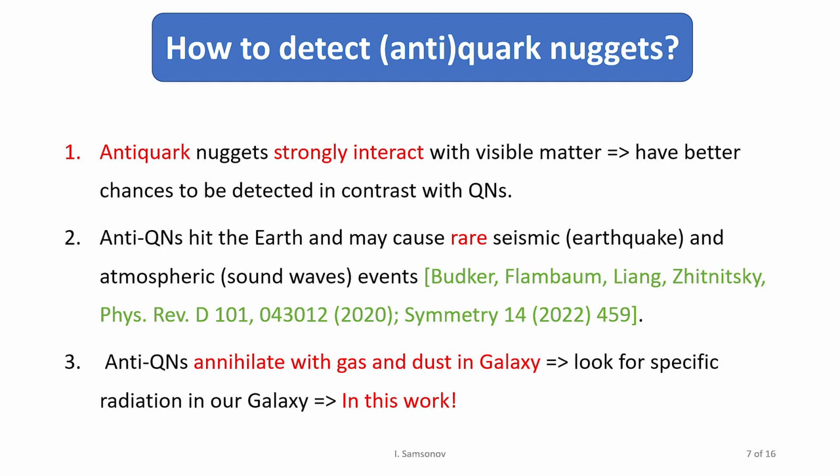The other natural manifestations of this model is to look for manifestations in the galaxy, in astrophysics. Anti-quark nuggets should annihilate with the gas or dust in our galaxy and they produce very specific pattern of radiation. This is what I'm going to talk about today. I will speak about possible astrophysical manifestations of anti-quark nugget model of dark matter.